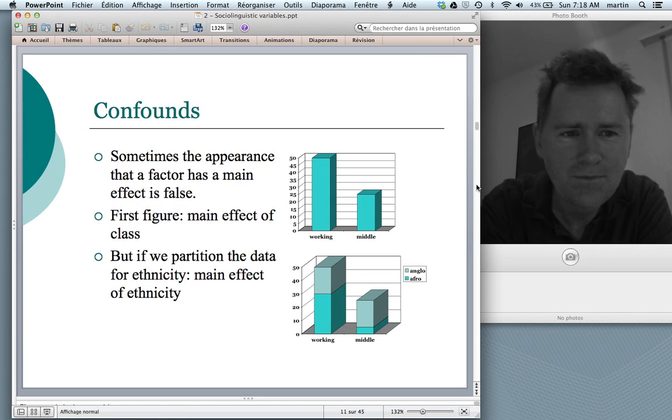Speaking of effects, there is one important thing that I need to mention, and that is the concept of a confound. A confound means that something looks like it has an effect. The appearance is there that a factor has a main effect, but this appearance is, in effect, false. Look at the first figure here, the first two bars. What this looks like is that there's a main effect of class, of socioeconomic status. We have the working class people at 50%, and we have the middle class people at 25%. So that looks like class evidently has a major effect on how people talk. However, this effect is only apparent. There is something hidden in the data that gives us this idea that class has an effect, but it's actually not there.